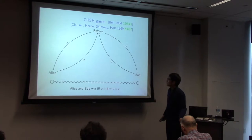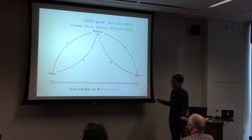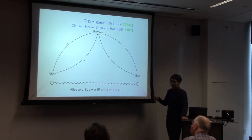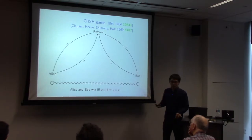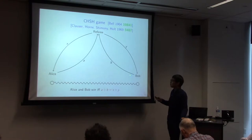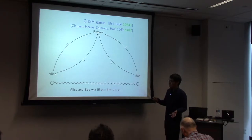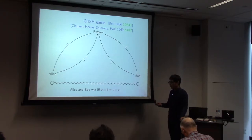Let's consider the CHSH game. This is a very simple game in which we can distinguish classical physics and quantum physics. There are three persons: Referee, Alice, and Bob. The referee gives X and Y to Alice and Bob respectively — both are bits. Alice and Bob answer A and B, both bits. They win if and only if A XOR B equals X AND Y.